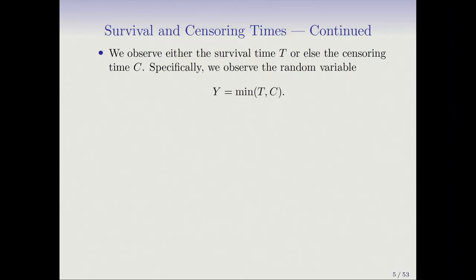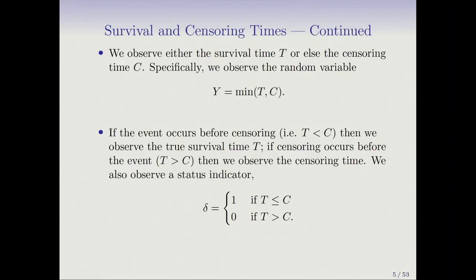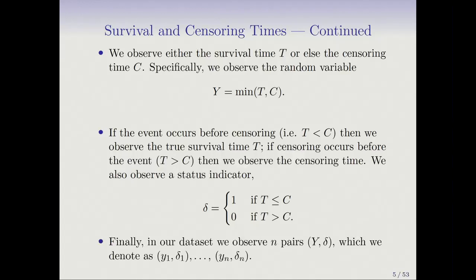What you observe is the minimum of T and C. If the failure occurs before the censoring, we get to see it; otherwise, we only know the censoring time. We call the minimum Y — our observed survival time. The indicator delta equals 1 if T is less than C (an actual observed failure) or 0 if censored. Our training data consists of n pairs of Y and delta, one for each observation.